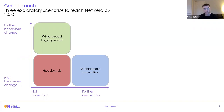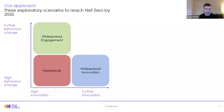The widespread engagement scenario has high levels of behaviour change, for example further action on dietary changes and aviation. The innovation scenario focuses more on particular reductions in costs and availability for key technologies at the high end of the innovation spectrum. And then there's the headwinds scenario, which has less behaviour change and less innovation, more dominated by infrastructure changes such as CCS. All three scenarios get to net zero by 2050 but in different ways.